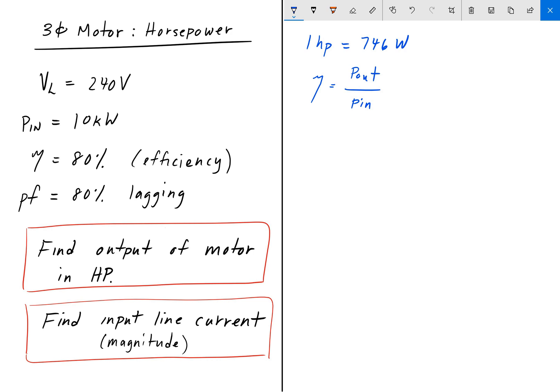And we're given what the input power is, 10 kilowatts. And so we can rearrange this equation here as power out is equal to the efficiency times power in. And we can plug in the numbers there, 80% times the input power, 10 kilowatts. And that gives us 8 kilowatts.